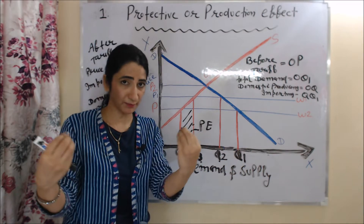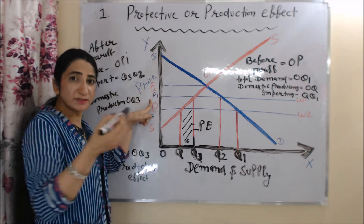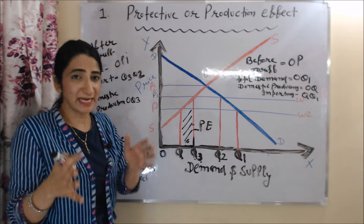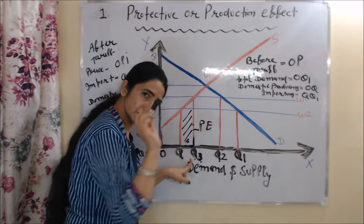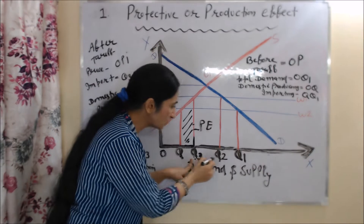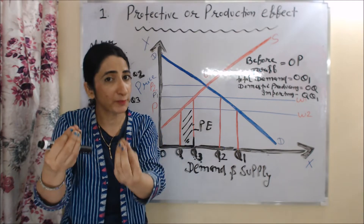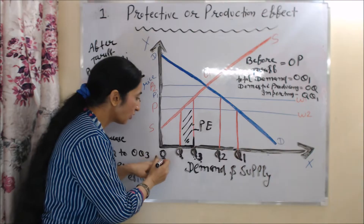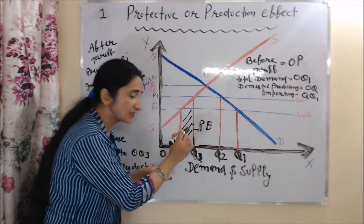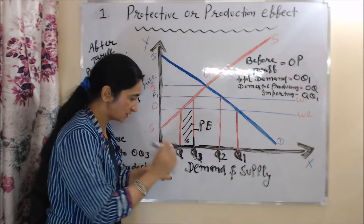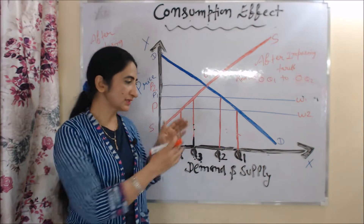Now suppose the government imposed a tariff. As the government imposed tariff, the price increased — now the price of goods is OP1. Because imports become very expensive, we reduce the quantity of imports. After imposing tariff, we have only Q3Q2 import. Because imports became expensive, we increased our domestic production. Our domestic production has increased from OQ to OQ2.